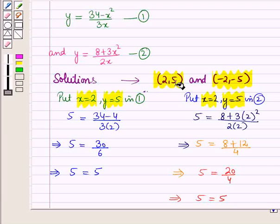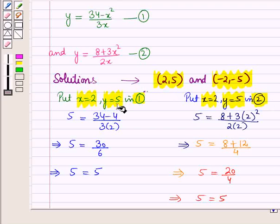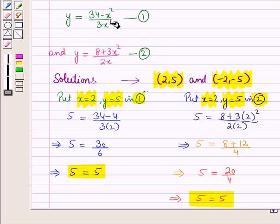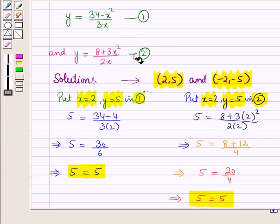We have checked that the ordered pair (2, 5) forms the solution of the given system of equations by putting x = 2 and y = 5 in both equations, and this ordered pair satisfies both equations. Similarly, the ordered pair (−2, −5) will also satisfy the given two equations. So we have found the solution of the given system of equations, and this completes our session. Hope you all have enjoyed the session. Thank you.